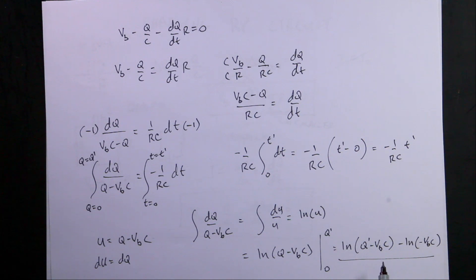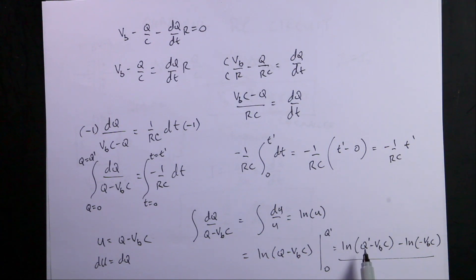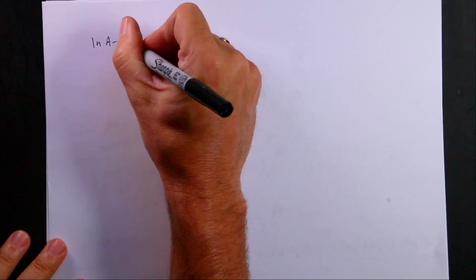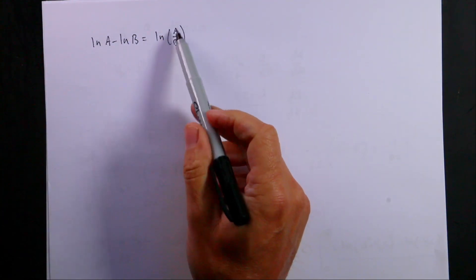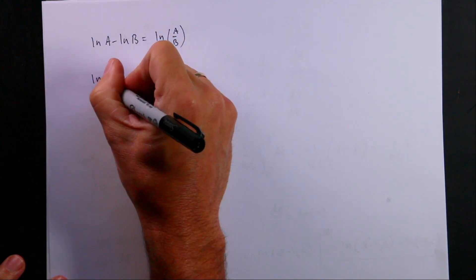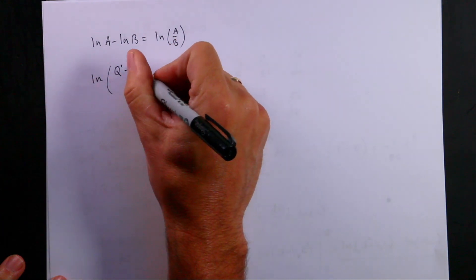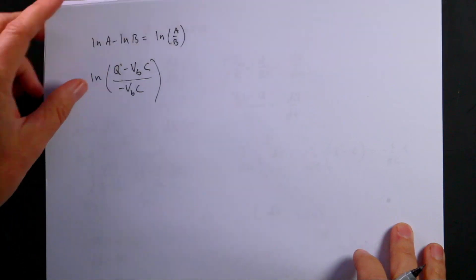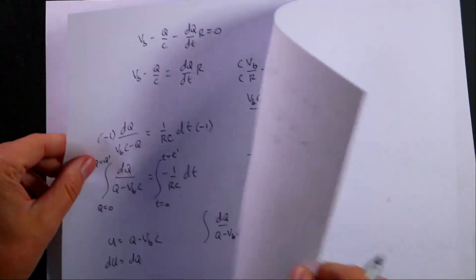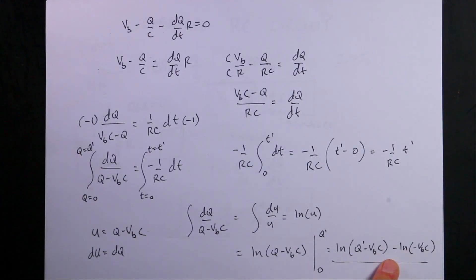Now, using the property that ln(A) minus ln(B) equals ln(A/B), I can write this as the natural log of (Q' minus V_B·C) over (negative V_B·C). This is better because the ratio has no units — you can't take the natural log of something with units. Setting the left side equal to the right side gives: ln[(Q' minus V_B·C) / (negative V_B·C)] equals negative (1/RC)·T'. I'll now rename Q' back to Q and T' back to T.